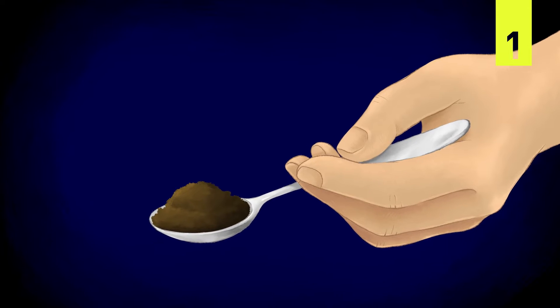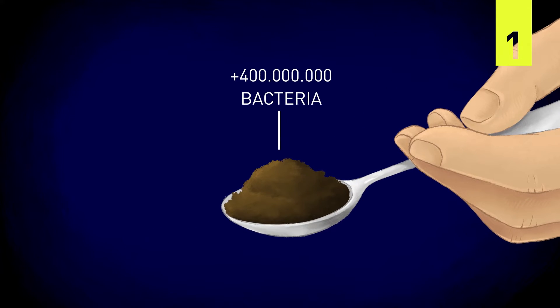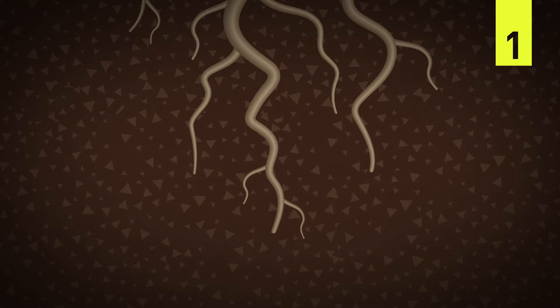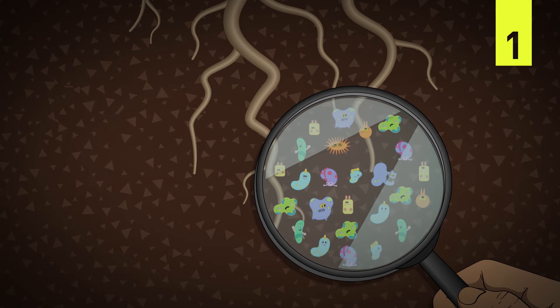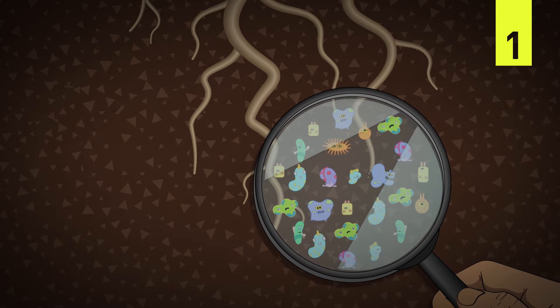In a tablespoon of soil, there are more than 400 million bacteria. Bacteria love living next to the roots of plants, and they also provide them many benefits.